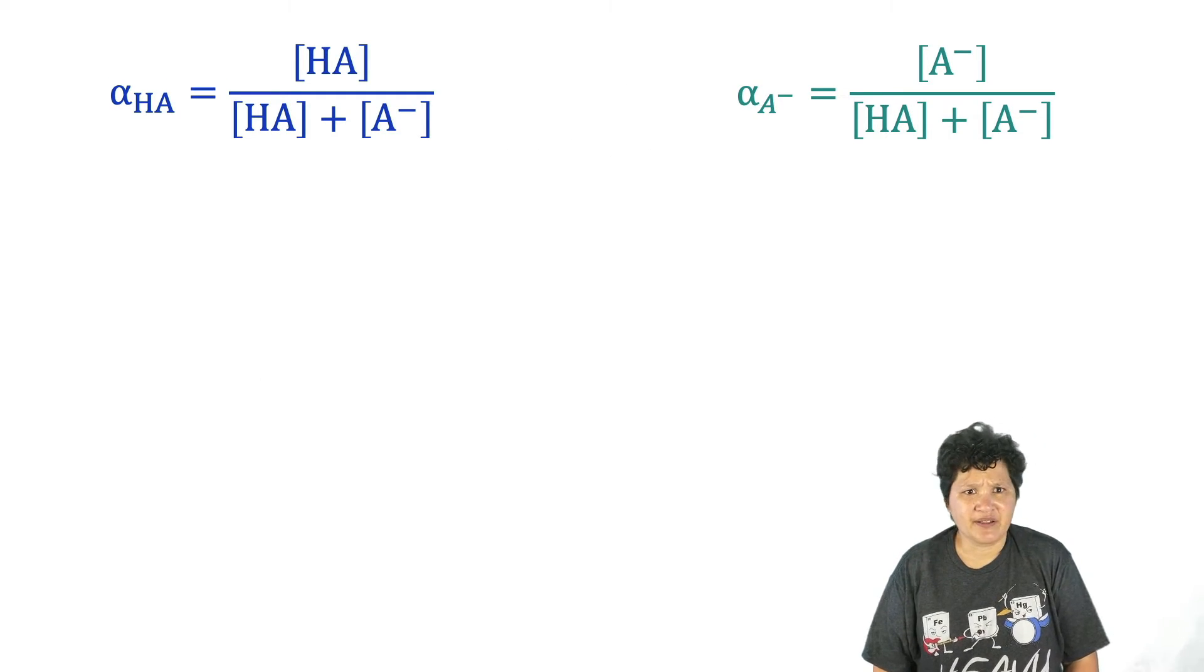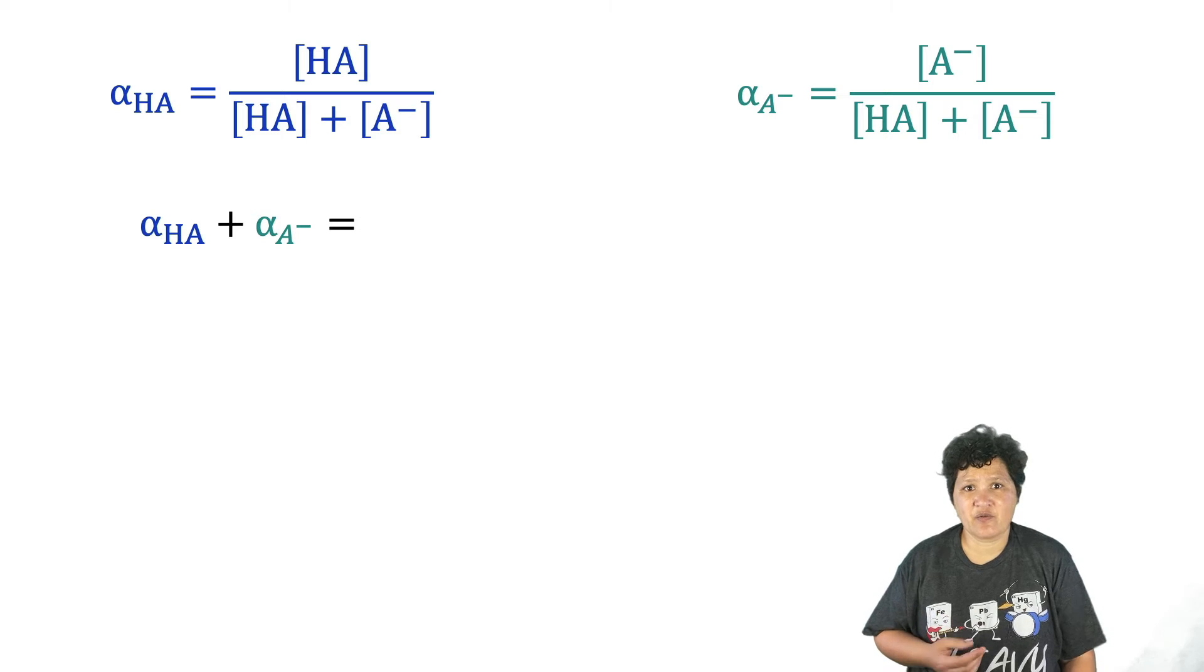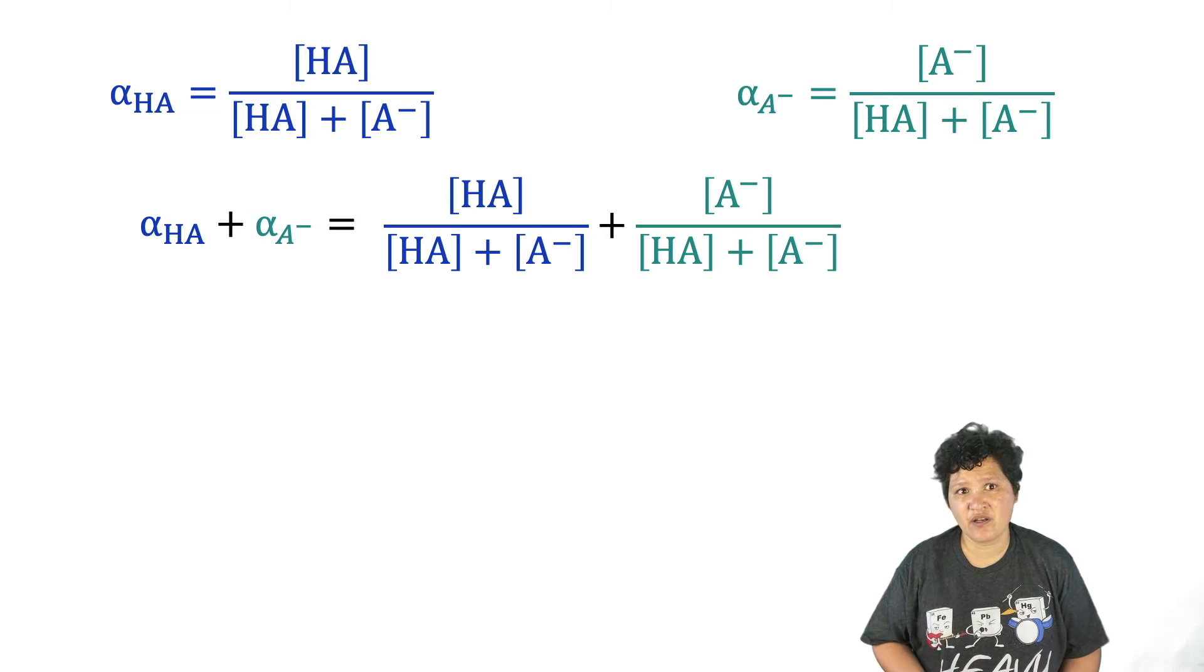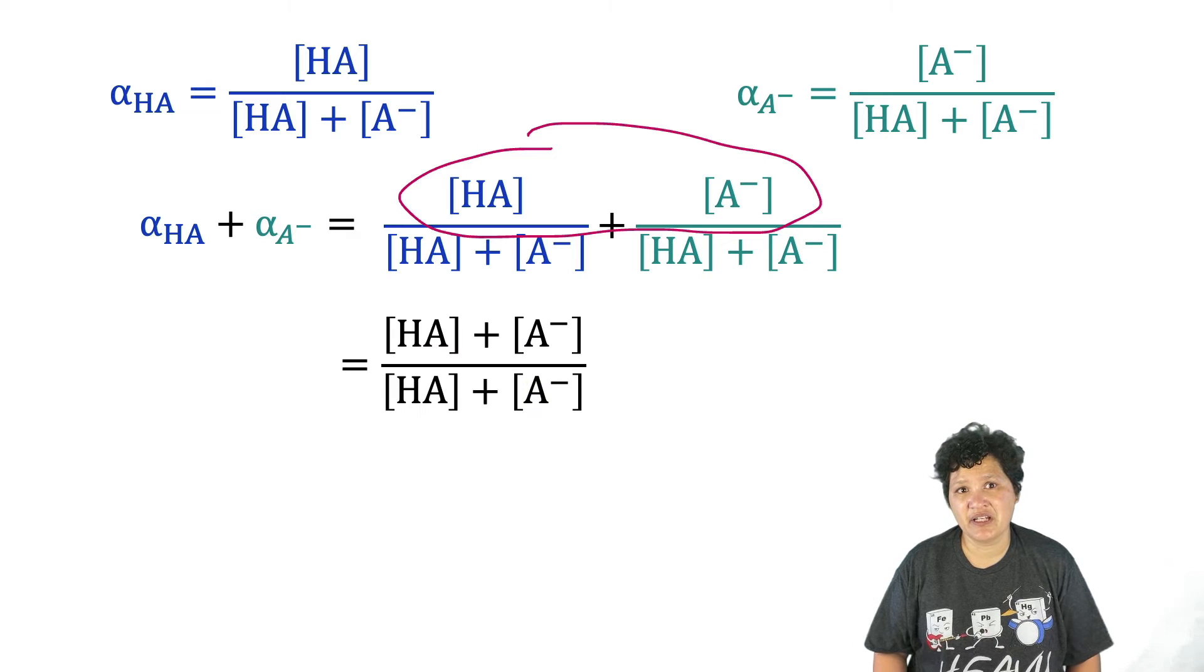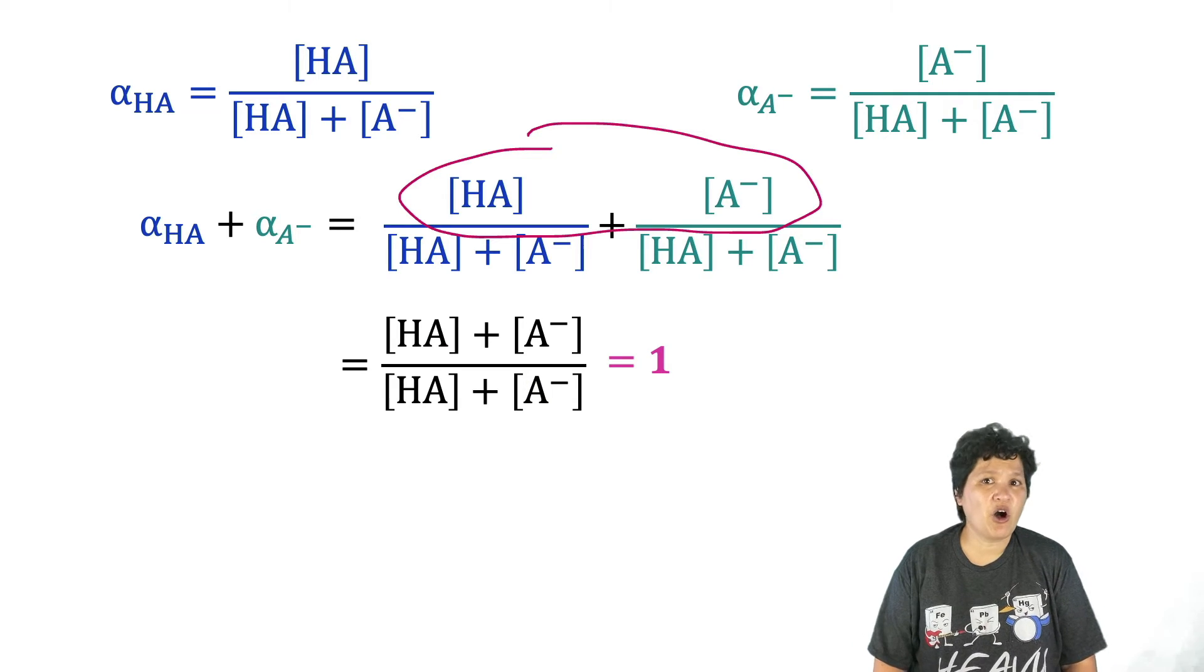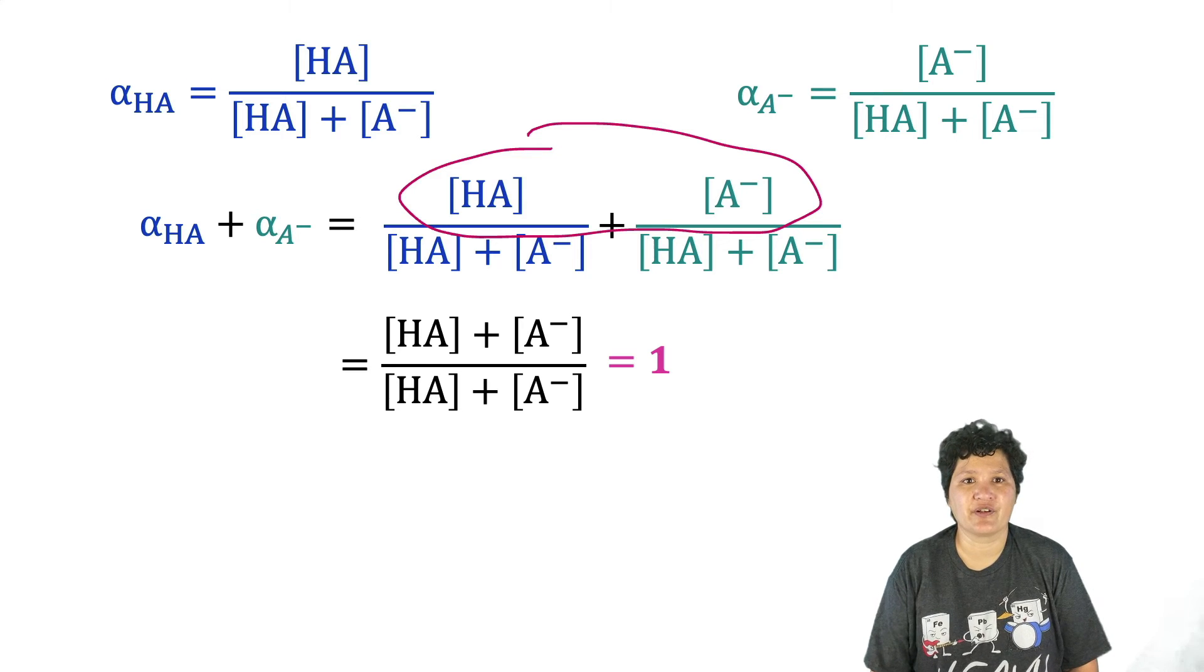I want you to notice something, that if we add the fractional composition of HA to the fractional composition of A-, we are adding two fractions, which can be combined, and the simplified total equals one. That will always be true of your fractional compositions, because your fractions of each of the things you have, in this case A- and HA, have to add up to the whole amount that you started with.